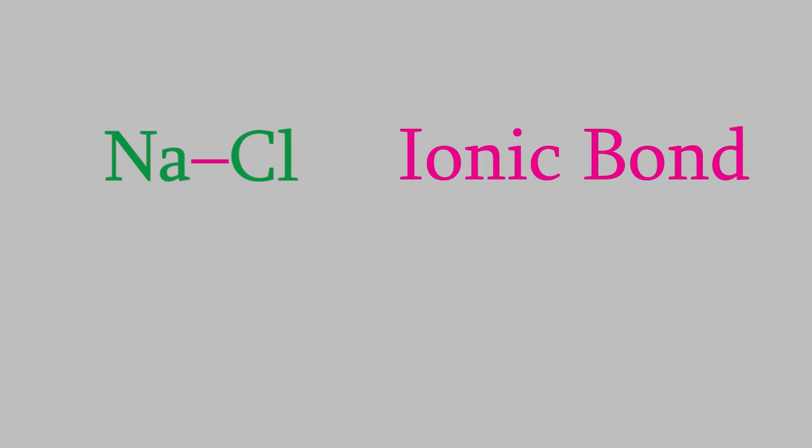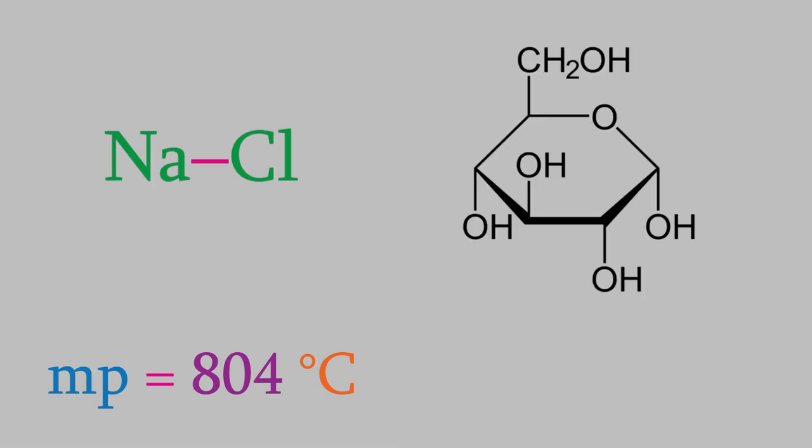It turns out that ionic bonds are much stronger than covalent bonds, and we can see that when we look at properties like the melting point. For example, the melting point of sodium chloride is 804 degrees Celsius, but on the other hand, the melting point of glucose, which contains only covalent bonds, is much lower, 148 degrees Celsius.